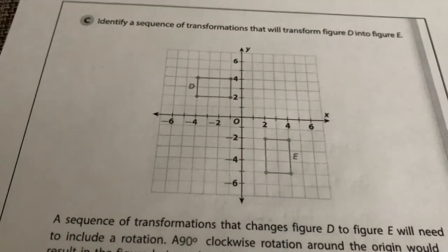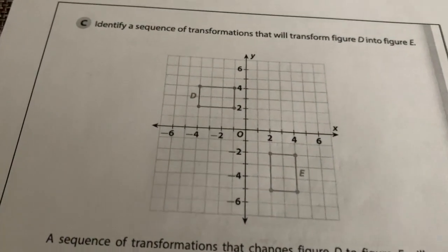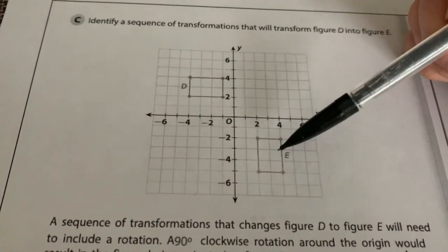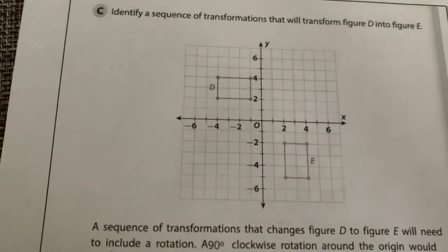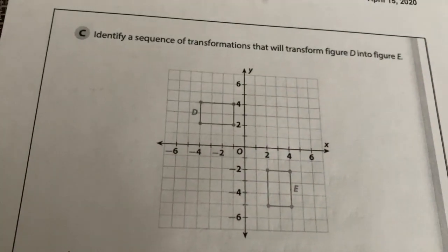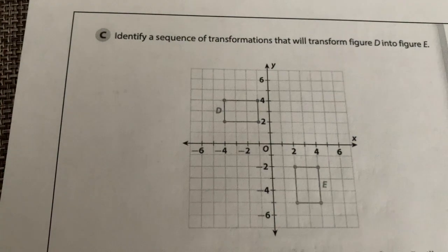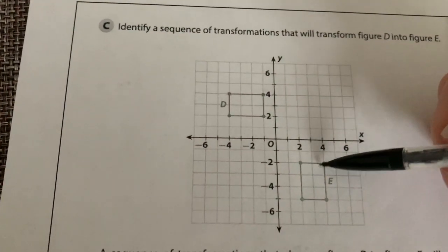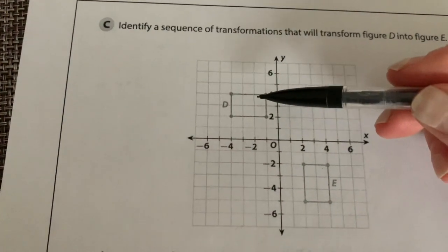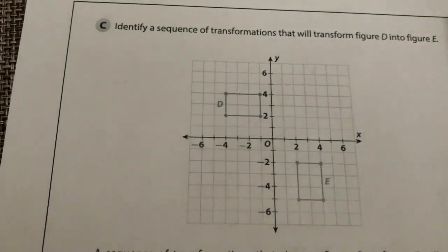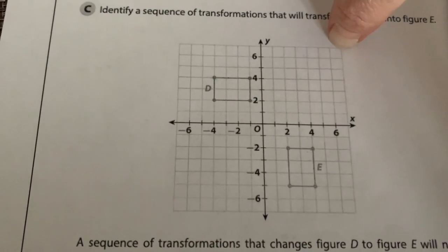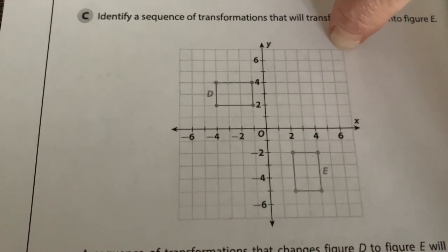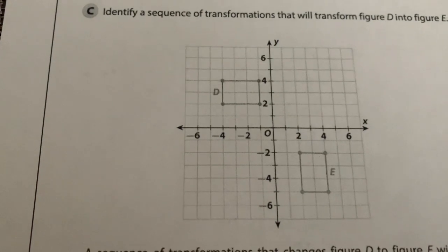So for C here, we're going to identify a sequence of transformations that will transform figure D into figure C. So this one's already done for you. So I would have you do it on your own, but it's already done. So we're going to take a look and see what type of transformations we could do. So if you look, your figure ends up in quadrant four. So you can think to yourself, maybe we should rotate it and see how many times and in which direction you would rotate it so that it ends up in quadrant four and see if it's maybe facing the right way.